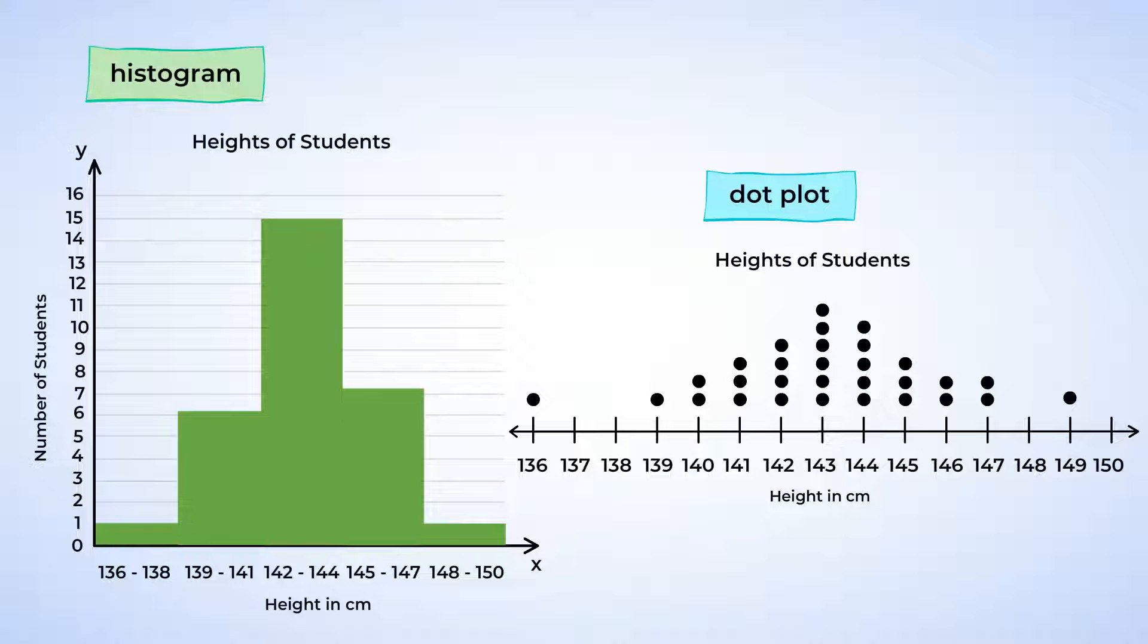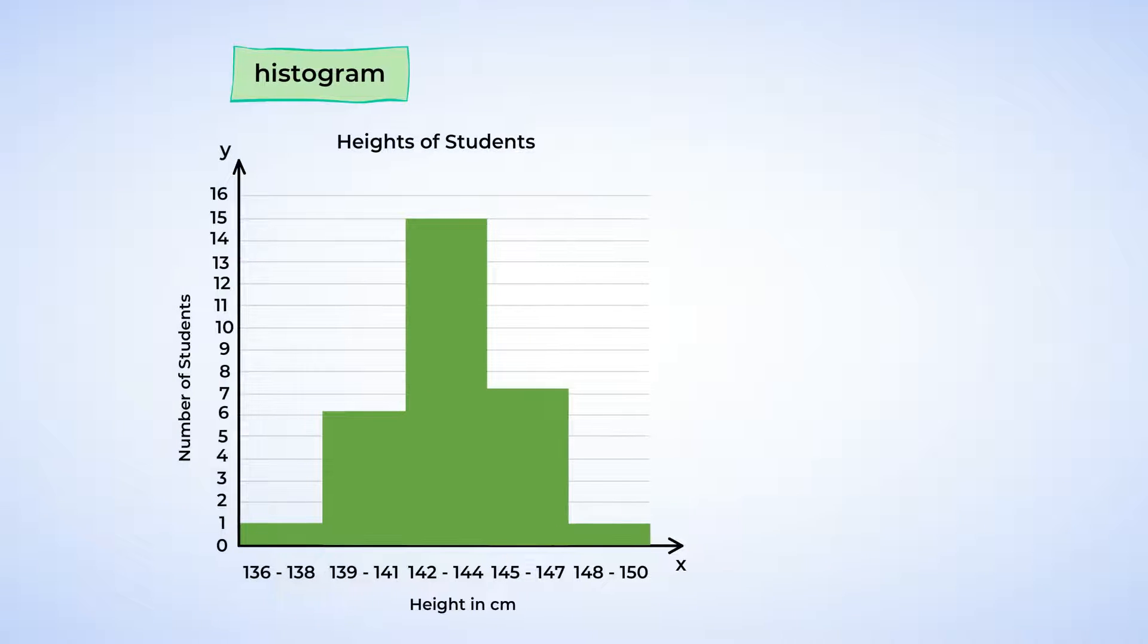Unlike the dot plot, it's harder to see outliers in the histogram. But we can still see that the data is symmetrical. Now, it's easier to summarize the results using a histogram. For example, what is the most frequent height in grade 6?